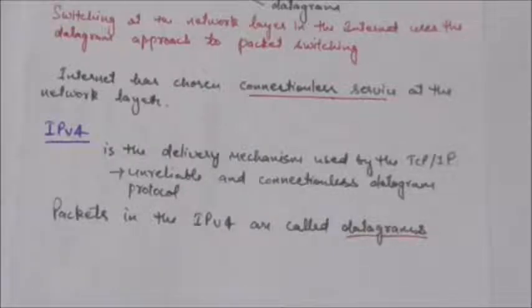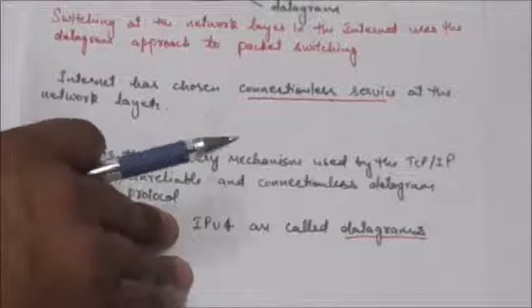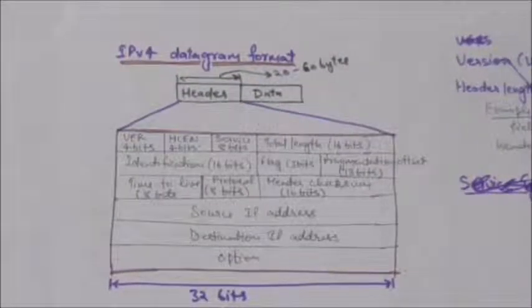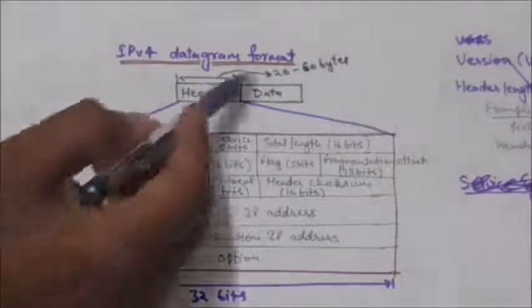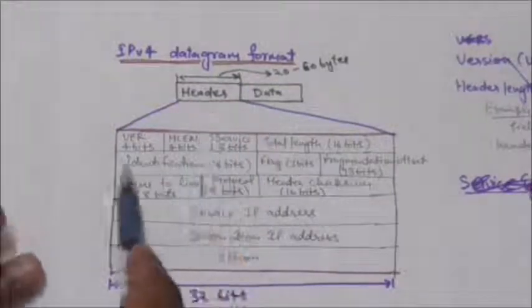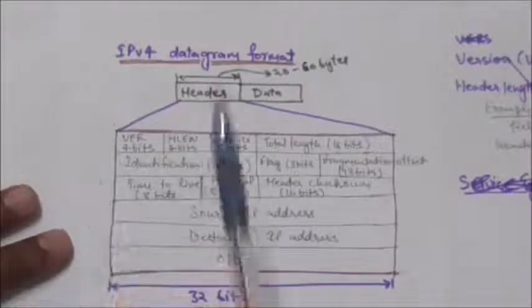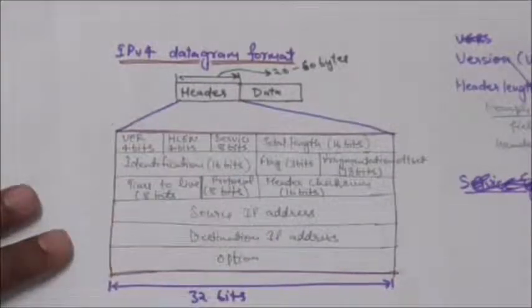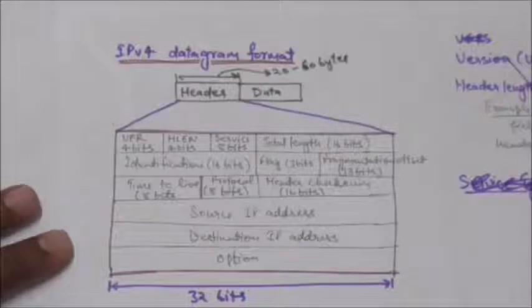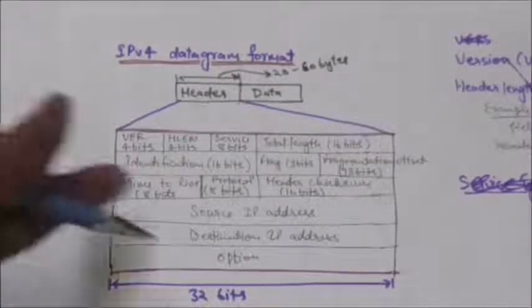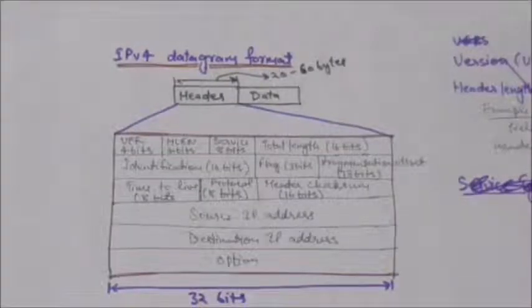If reliability is important, IPv4 must be paired with a reliable protocol such as TCP. Packets in the IPv4 layer are called datagrams. A datagram is a variable-length packet consisting of two parts: header and data. The header is 20 to 60 bytes in length and contains information essential to routing and delivery. We will study each of the header fields one by one.